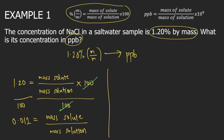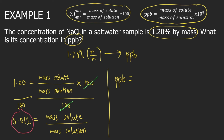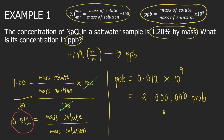Now that you have mass of solute divided by mass of solution, you will use the formula for PPB. PPB is equal to mass of solute divided by mass of solution, which we got as 0.012, and then you just put times 10 to the 9. So 0.012 times 1 billion equals 12 million PPB. Or you can convert this into scientific notation: 1.2 times 10 raised to 7 PPB. And this is the answer to the question.